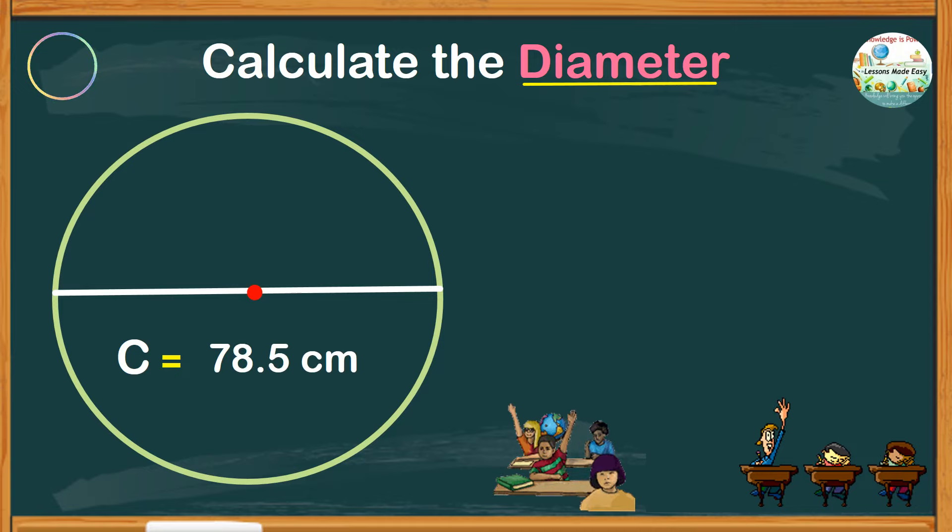To find the diameter, we can still use the formula C equals pi d.